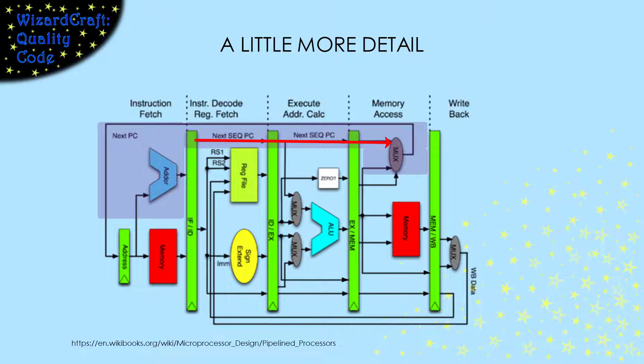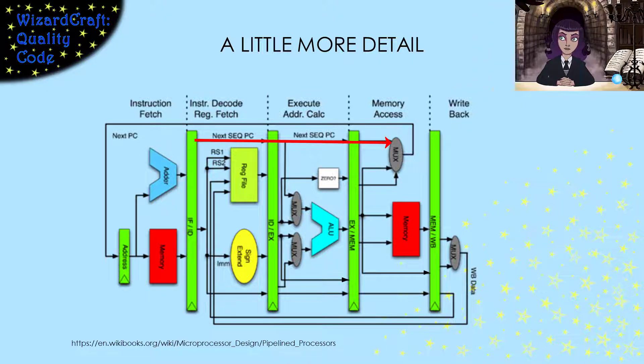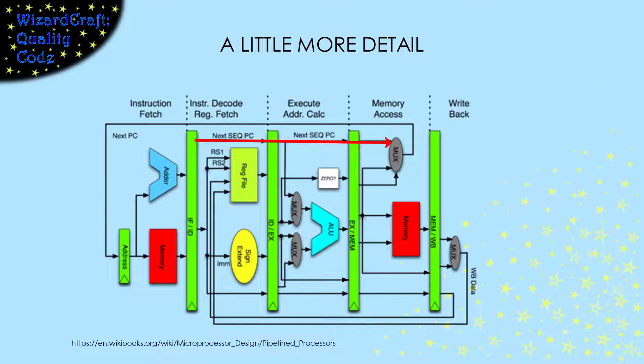You can see that, in this case, it has two inputs and one control line. In these kind of diagrams, control lines generally enter the block vertically, and inputs and outputs are horizontal. One input comes from the adder that incremented the program counter. The other comes from the output of the execute phase.